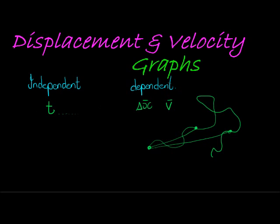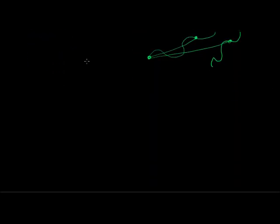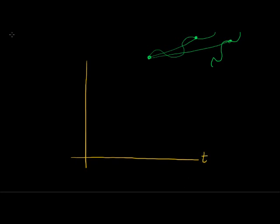This is important because it tells us where each variable goes on the axes. On our horizontal axis we always plot our independent variable — in this case, time (t). On the vertical axis we plot the dependent variable, which in this case is displacement.